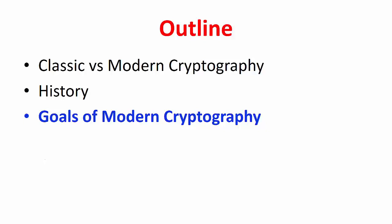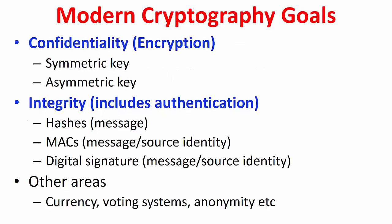Let us now look at the goals of modern cryptography. Modern cryptography started in the 1950s, and we will understand its evolution gradually as we go through this course. Classical cryptography just focused on confidentiality, whereas modern cryptography handles confidentiality via symmetric key and asymmetric key algorithms, which we will see more of later.